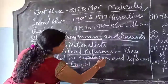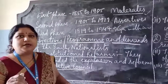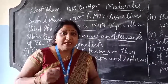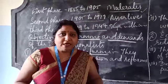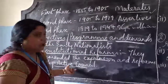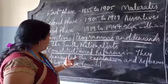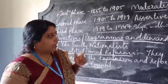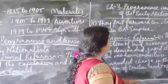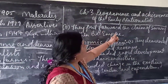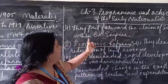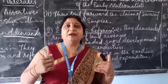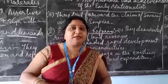Expansion means they wanted more Indian representatives in the legislative council. Second, they put forward the claim of Swaraj within the British Empire — in simple terms, they demanded Swaraj within the British Empire.